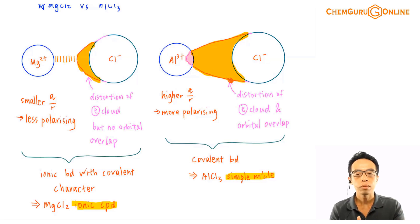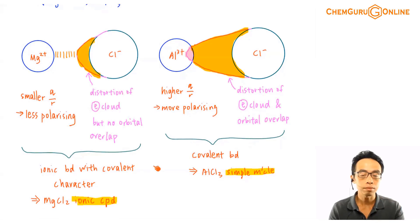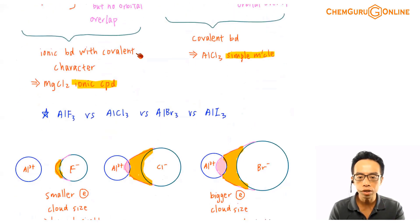This is the reason why there are certain things we need to memorize. We start off with AlCl3. We need to know AlCl3. This is a classic example involving pulling of electron cloud, distortion of electron cloud with orbital overlap. So we use this as a basis. Then we try to link it to other compounds. Some of it we can make deductions. So we use this AlCl3 as a basis.